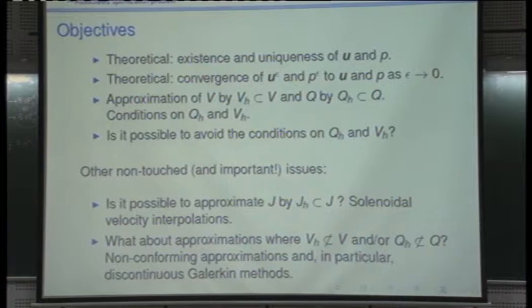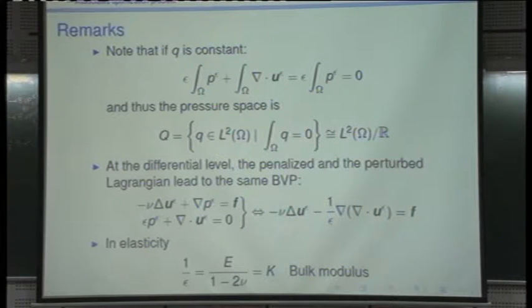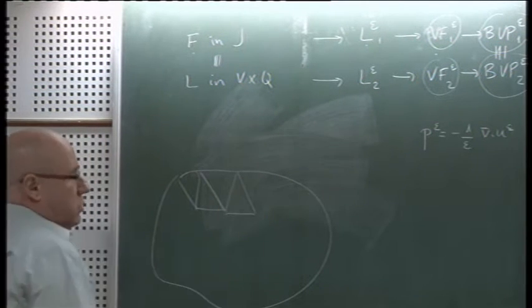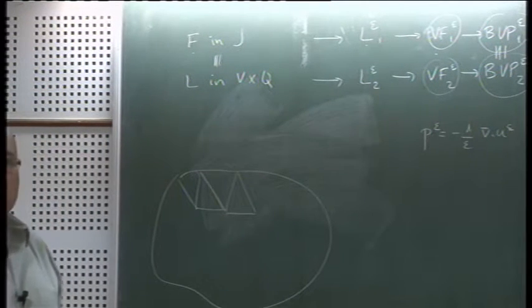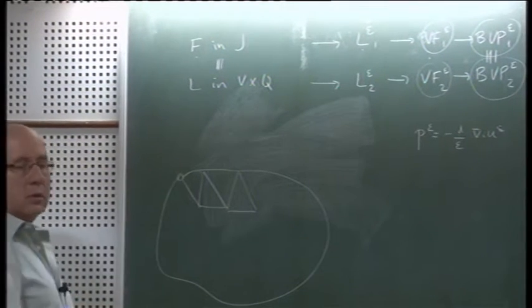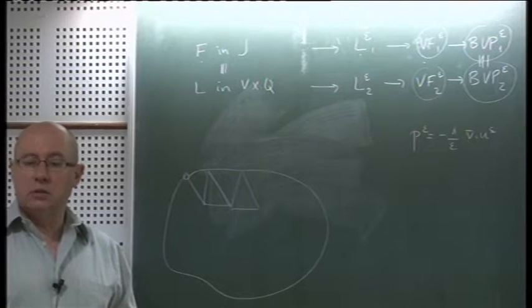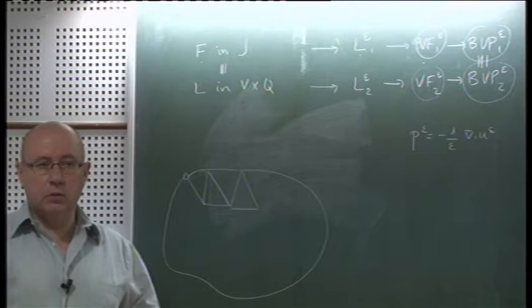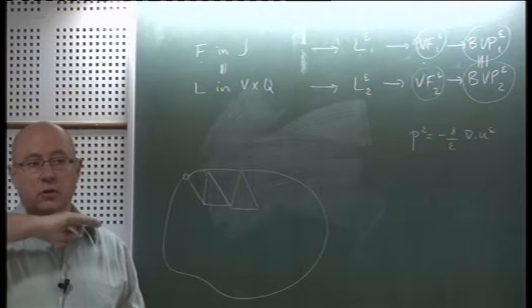A remark: if instead of writing the viscous term as minus nu times the Laplacian of u, we write it as minus 2 nu times the divergence of the symmetric part of the gradient of u — where the symmetric part is one-half of (grad u + grad u transpose), called the strain rate tensor in fluid mechanics — then instead of Poincaré-Friedrichs inequality we need Korn's inequality to guarantee coercivity. Korn's inequality says that the symmetric gradient controls the L2 norm.